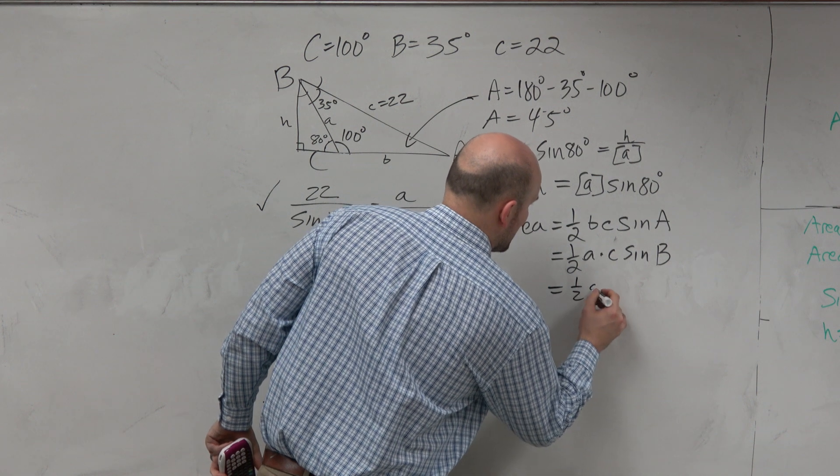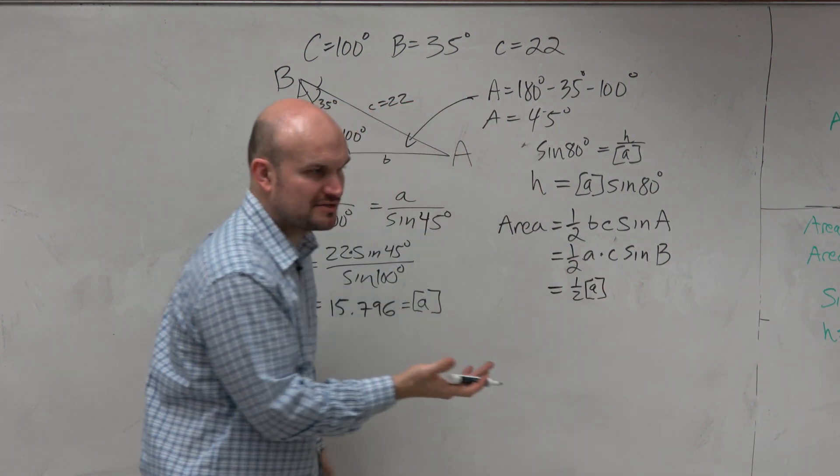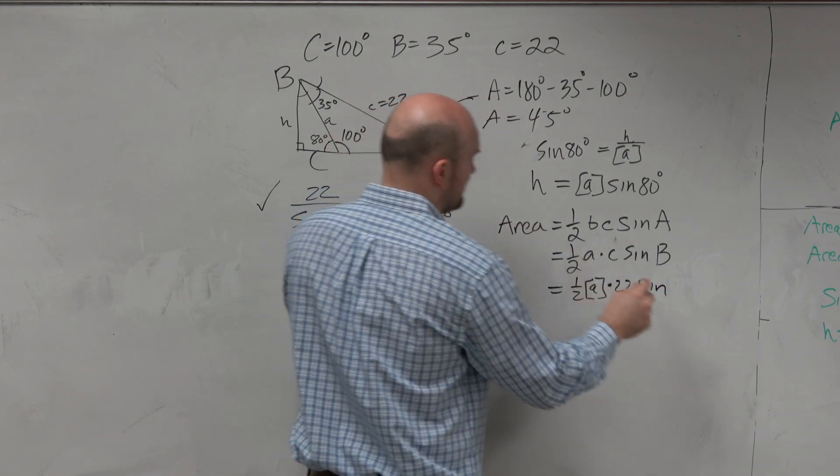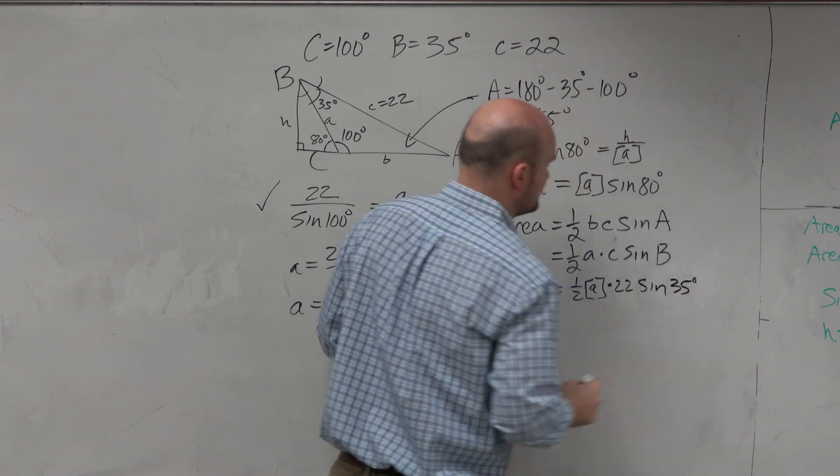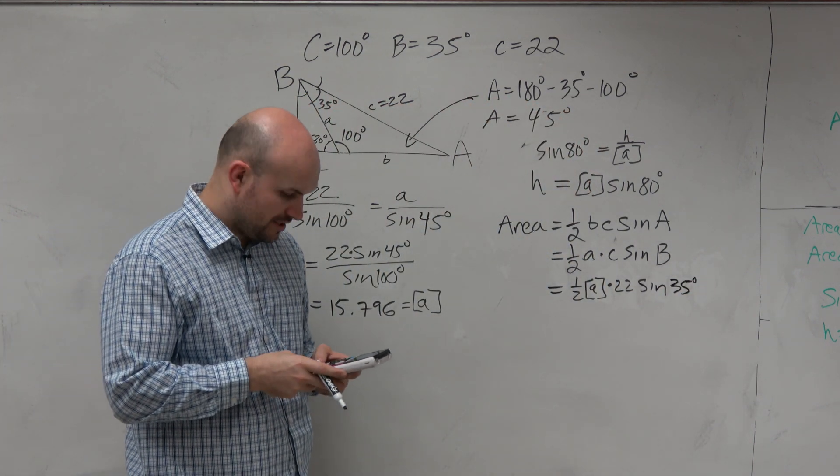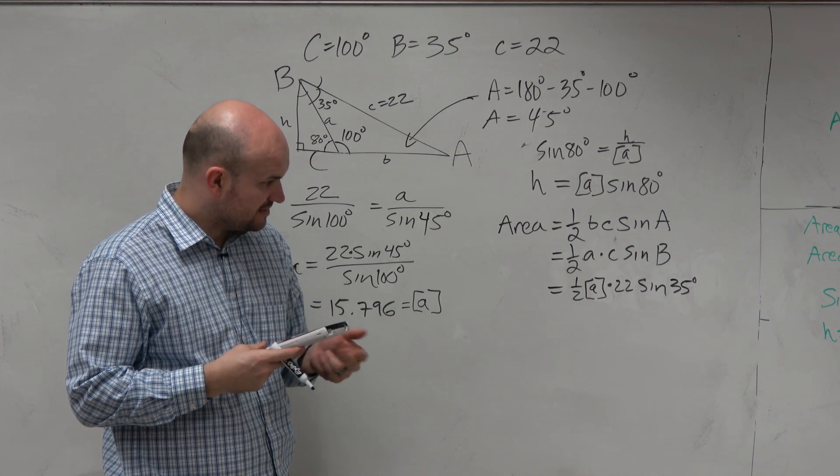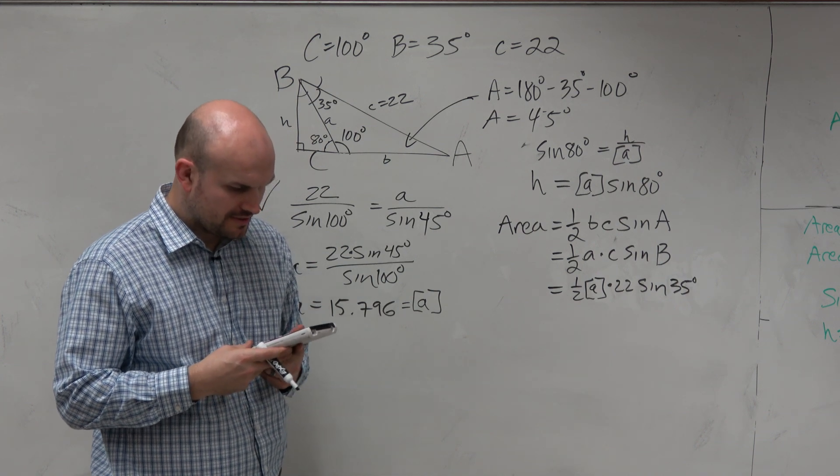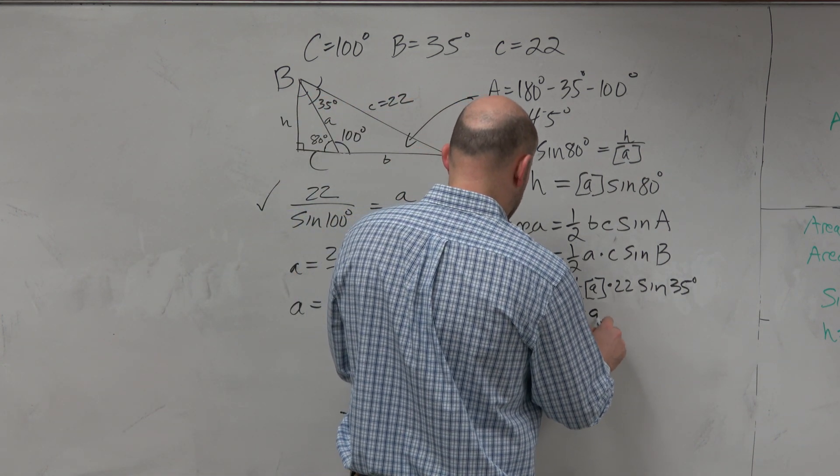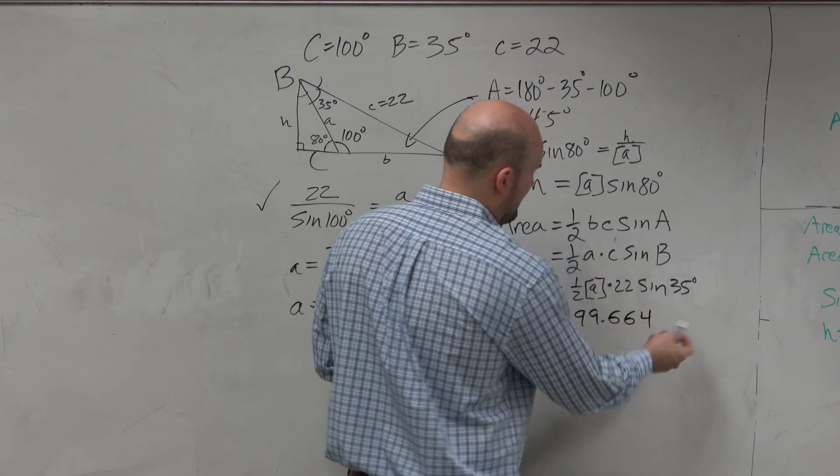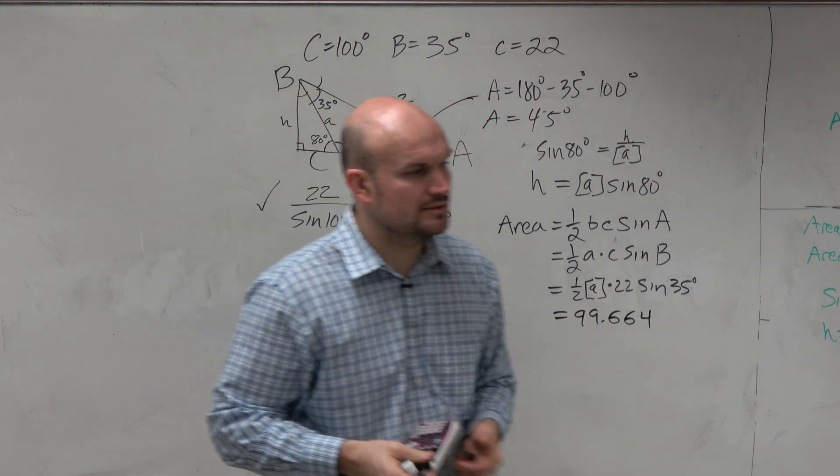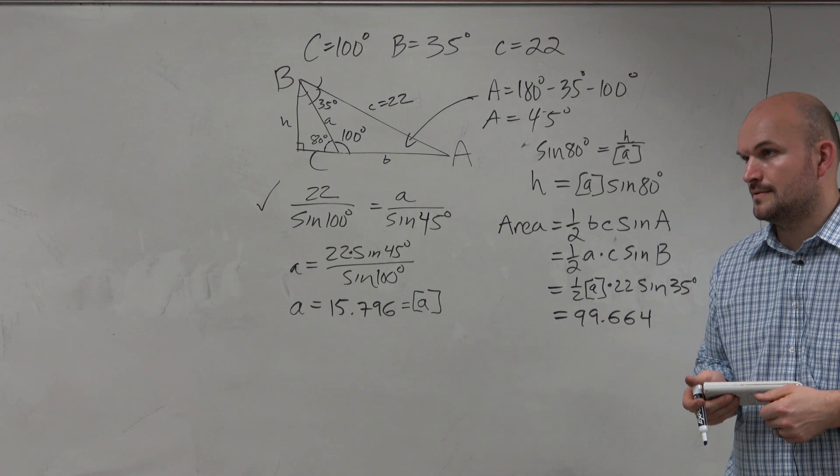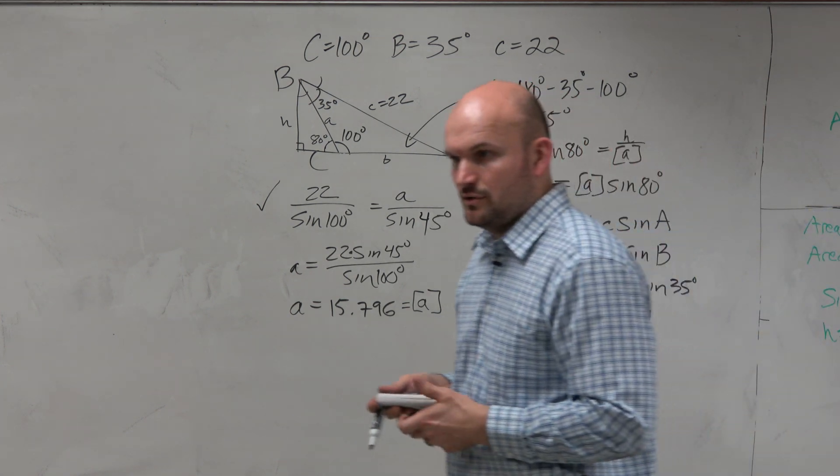So therefore, this is 1 half. My A was stored, so I just put brackets around it. You don't need to put the brackets around it, but that's the way I just like to write it. C is 22. And then I have the sine of B, which is 35. So now, I'm just going to type in my calculator, 0.5, which is 1 half, times alpha A, because I stored that, times 22, and then times the sine of 35 degrees. And I get an area of 99.664. And then, obviously, that's going to be units squared. Obviously, if we had a dimension, you could write that as squared units.